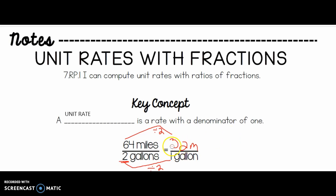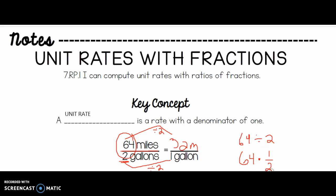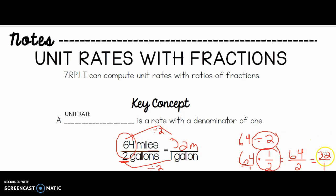I also want to show you something else. I could have just divided these two, because it's a fraction and the fraction bar means to divide. So I could have just done 64 divided by 2. And dividing by 2 is the same thing as multiplying by the reciprocal, which in this case would be 1/2. If I multiply 64 by 1/2, that's really 64 over 1, and if I multiply straight across I'd get 64 over 2 — right back to where we were — which is 32 over 1. My point is: dividing by 2 is the same thing as multiplying by 1/2. Keep that in mind today as we work through these fractions.